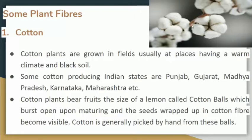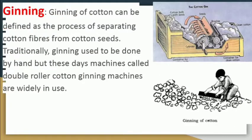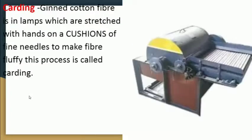Cotton is generally picked by hand. To get fiber or proper clothes from the cotton, there are a few steps. First is ginning. Ginning is a process of separating cotton fiber from cotton seeds. Using needles, we separate cotton fiber from cotton seeds. In one picture a machine is shown, while in another a man is doing it manually. Nowadays, double roller cotton ginning machines are widely in use. This is the basic process in which we separate cotton seeds from cotton fibers.